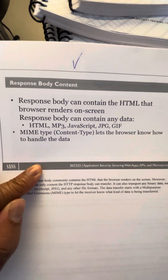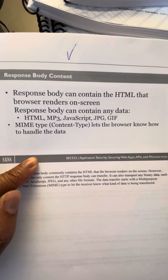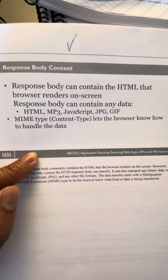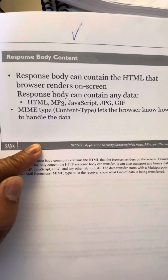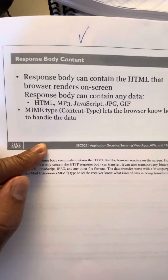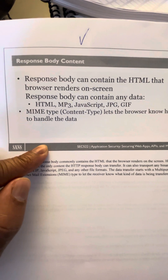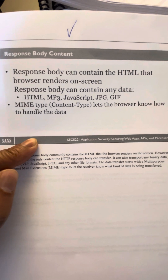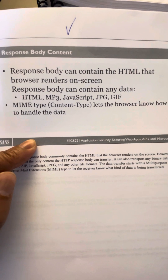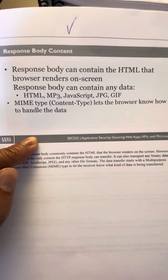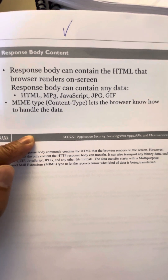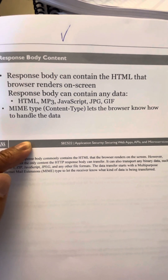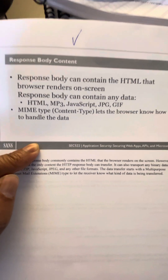The response body can contain the HTML that the browser renders on screen. Once you make a request for a resource, the web server sends back that resource as HTML and you see it on your screen. The response body can also contain MP3 files, JavaScript, JPEG files, GIFs, and the MIME type — the content type — lets the browser know how to handle the data.